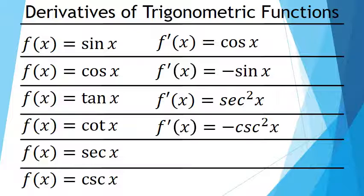The derivative of the cotangent of x is the opposite of the cosecant squared of x.